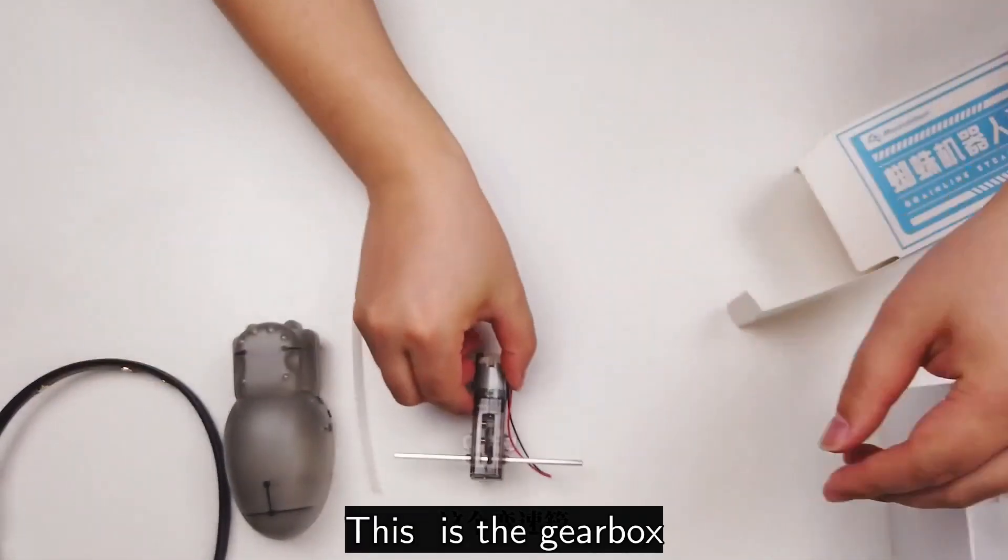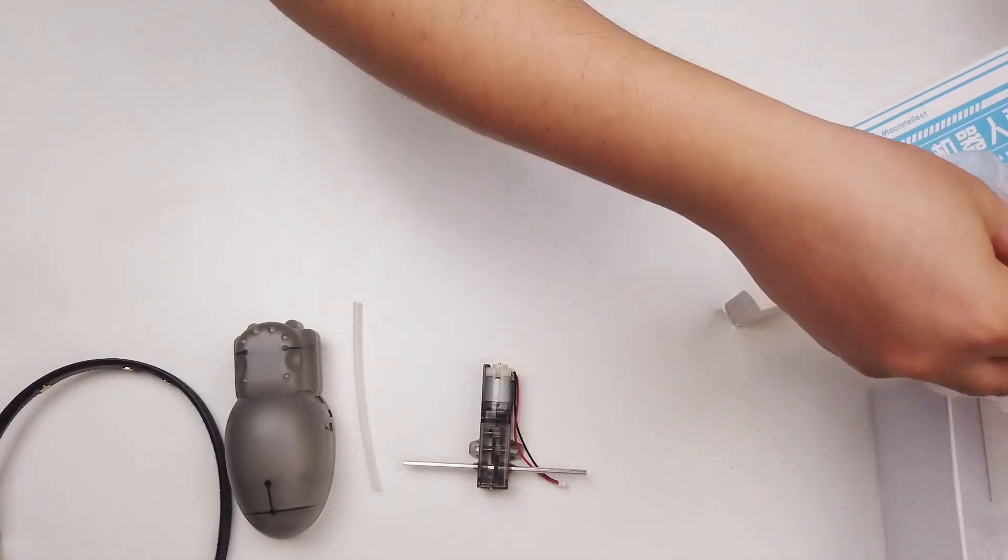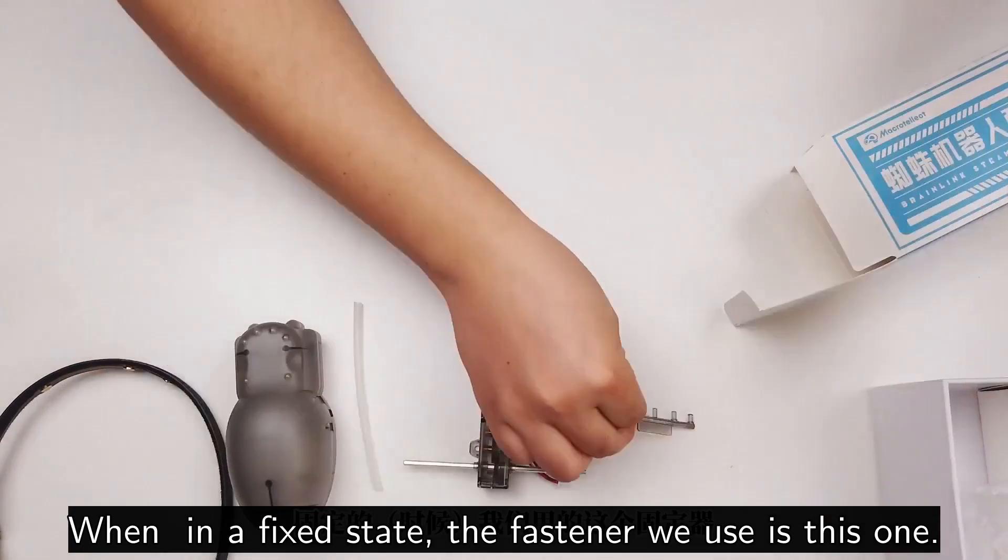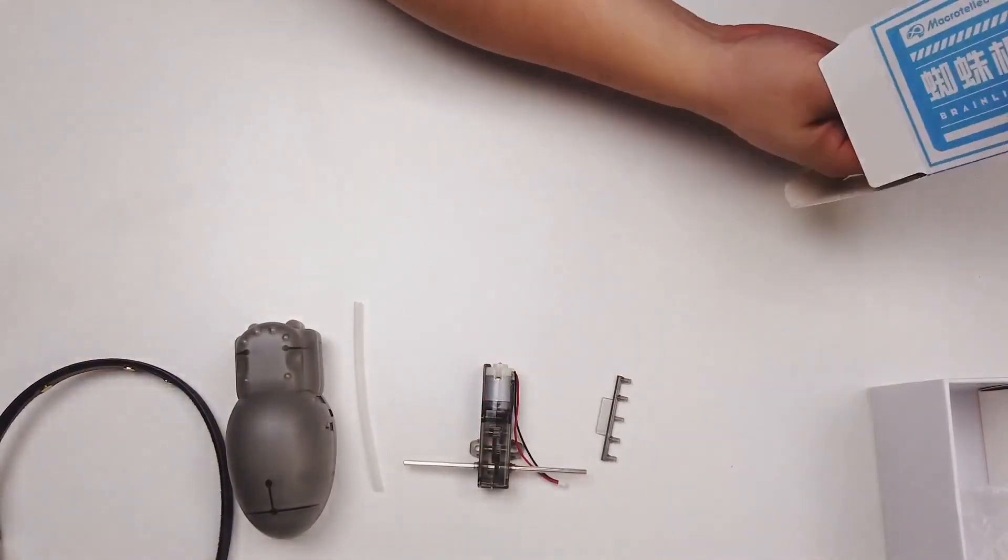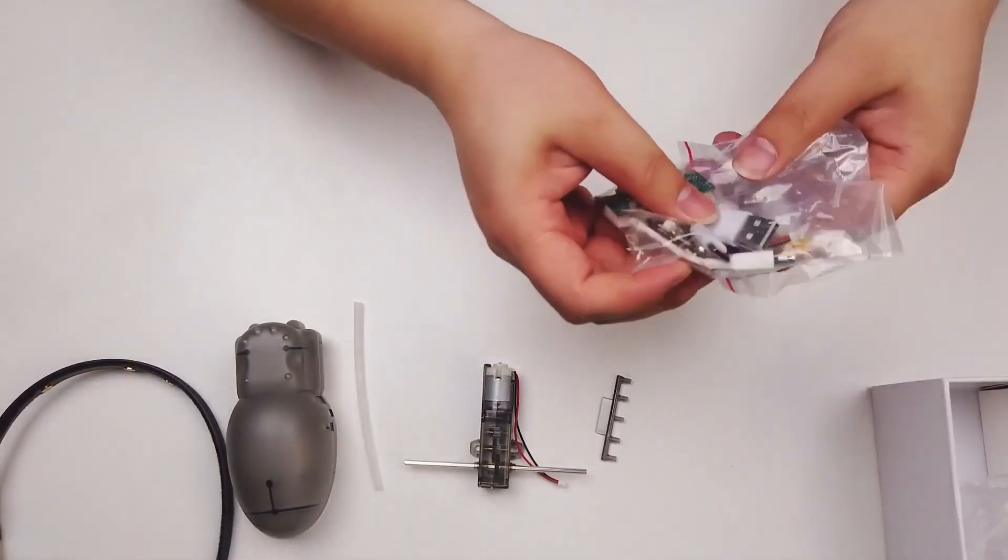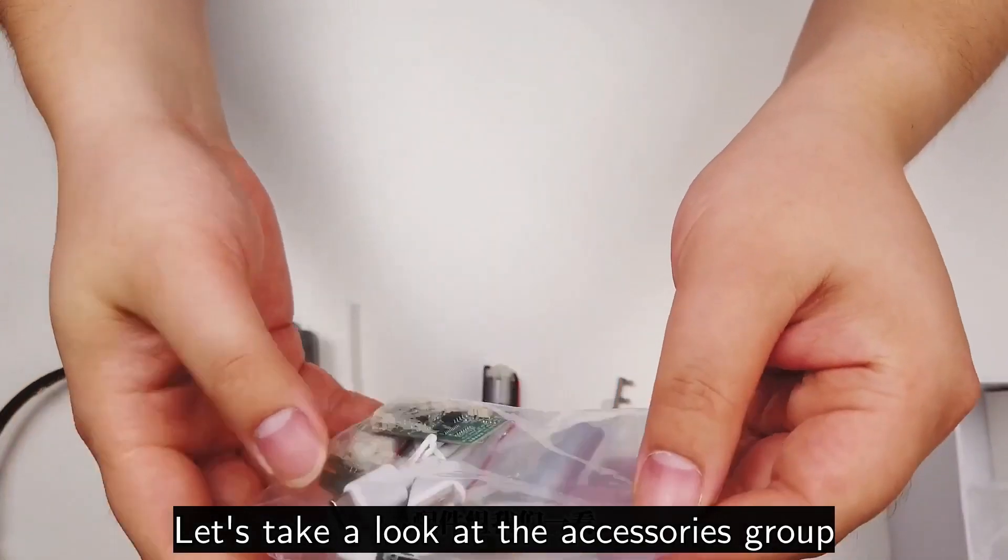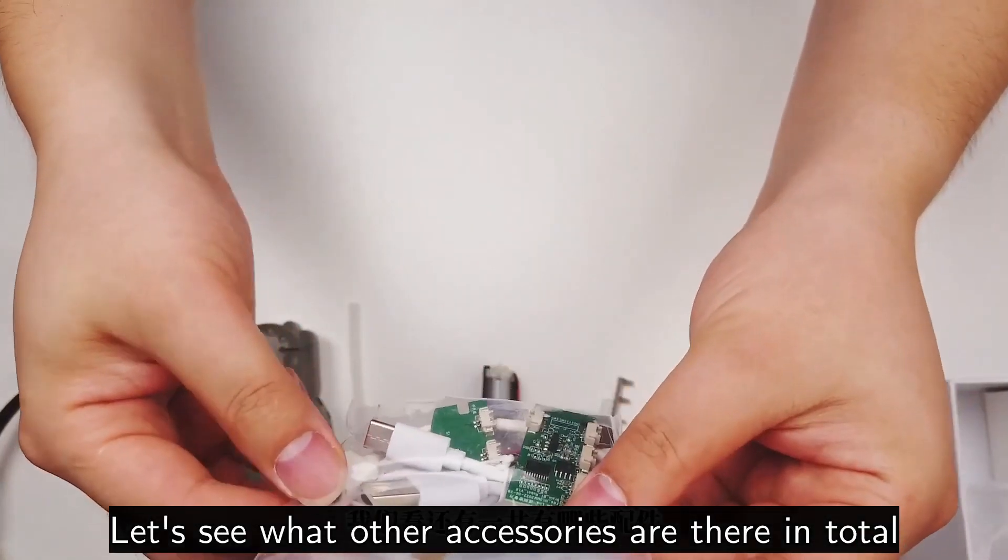This is the gearbox. When in a fixed state, the fastener we use is this one. This is the accessory box. Let's take a look at the accessories and see what other accessories are there in total.